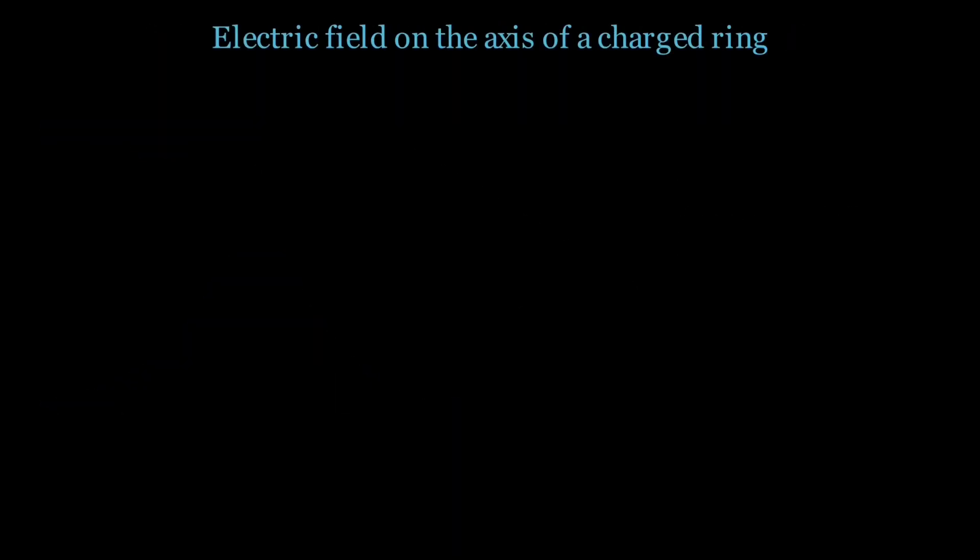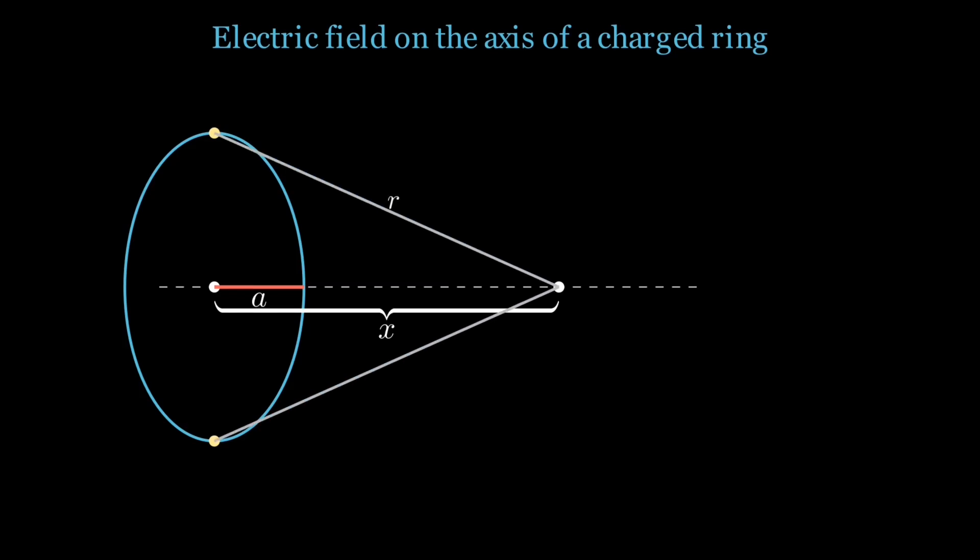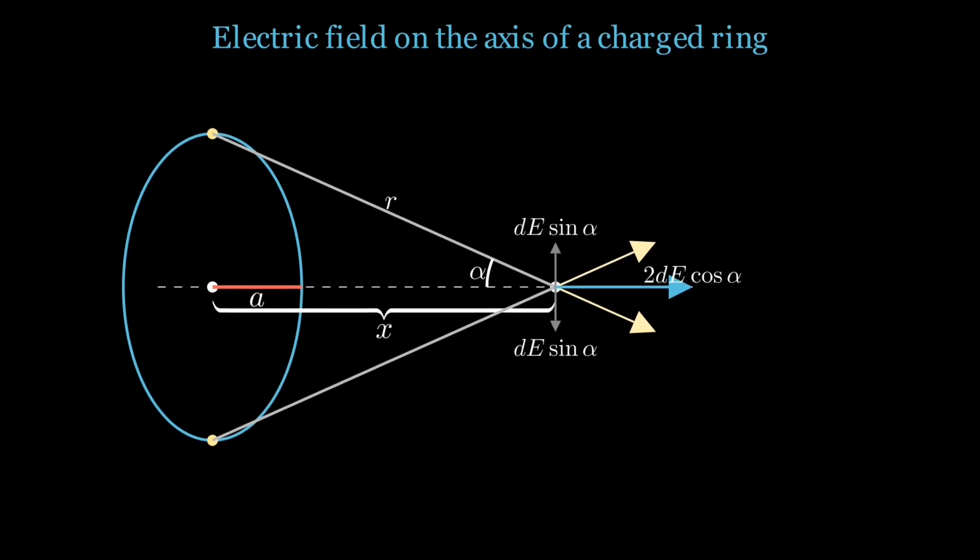For the electric field on the axis of a charged ring, symmetry wipes out most of the complexity. Each bit of charge has a partner directly opposite to it, so their sideways pulls cancel, leaving only the pushes or pulls along the axis. Geometry tells us how much of each tiny field points that way, and symmetry ensures every surviving piece lines up perfectly.